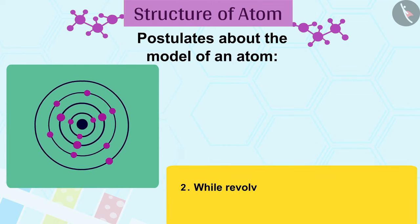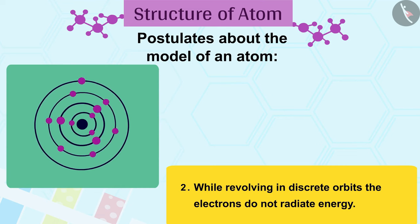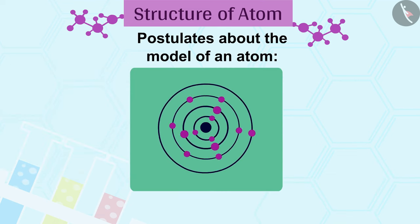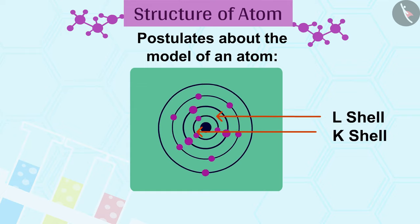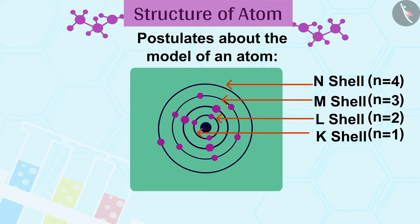These orbits or shells are represented by the letters K, L, M, N, or the numbers n equals 1, 2, 3, 4, and so on.